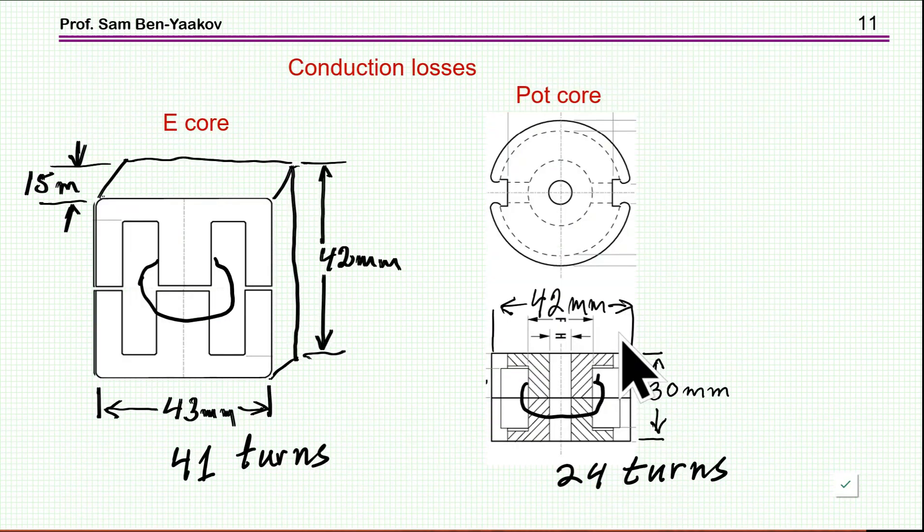Now, what about the conduction losses? Well, conduction losses are in first approximation due to the resistance of the wire, and therefore the length of the total winding here and the length of the total winding here will be relevant. Here we have 41 turns, here we have 24 turns, so less turns, but the path is larger here, because this is only 15 millimeters. So I'm leaving it as an exercise to you, watching this video, to calculate the losses here and here, in the first approximation, just the resistance of the wire. Of course, I'm not taking into account, I'm not going into the question of skin effect, proximity effect, and other effects.